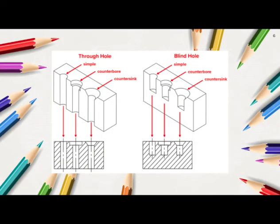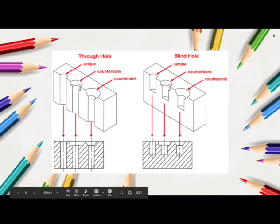Here's a diagram of a set of through holes and a set of blind holes. In this diagram, you can see that we have a simple, counterbore, and countersink through hole. In this diagram, we have a blind simple hole, a blind counterbore hole, and a blind countersink hole. In the actual side view, we have a section view that illustrates that these holes come all the way through the object while these holes only come partially through.